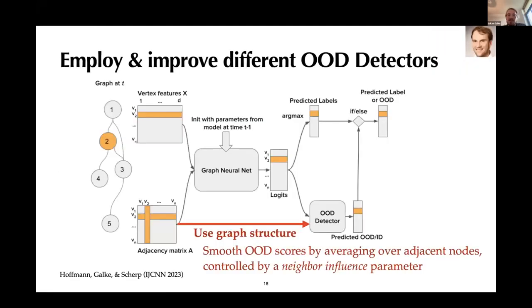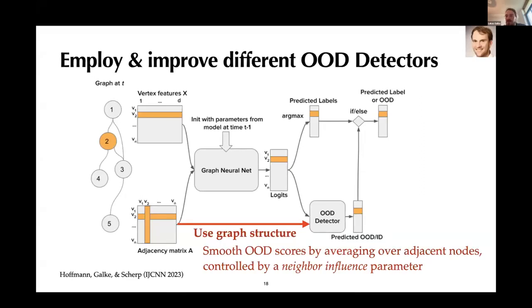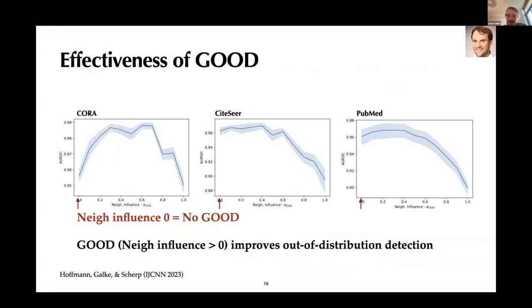The last topic I want to mention is whether the graph structure can improve the out of distribution detection. So going back to the figure before, we just add one more line. So the out of distribution detector module can now also use the graph structure. And this idea was the idea of a student, Marcel Hoffmann, on the top right. The key idea is to smooth the OOD scores by averaging over adjacent nodes. And this can be controlled by a neighbor influence parameter. And the pattern in the results is that you usually can get better than having zero neighbor influence. So that shows the usefulness, especially on Cora, you can see it. But also on the other datasets, the peak is always somewhere higher than zero, which means that the smoothing of the neighbors helps.